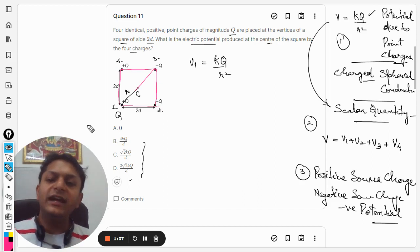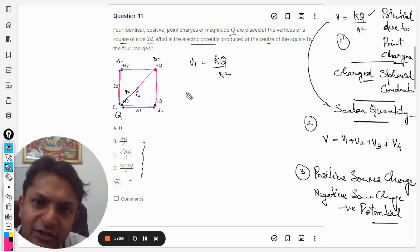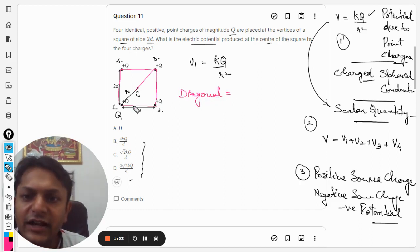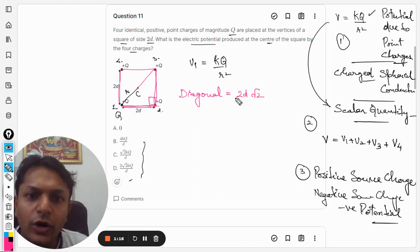And as we can see that r is basically half of the diagonal, the length of the diagonal. And it is a square, so the length of a diagonal can be computed with the help of Pythagorean theorem. So you can do it by yourself, I'm just taking the value directly. The shortcut works like this is 2d and this is 2d, so the diagonal is 2d multiplied by root 2.